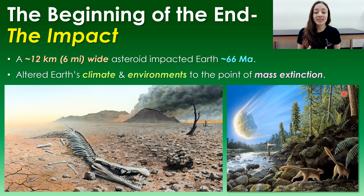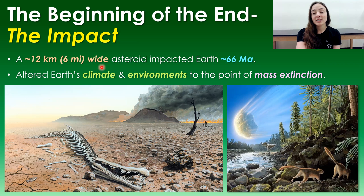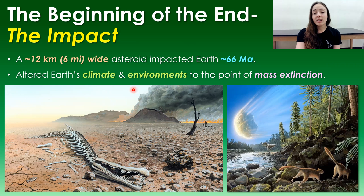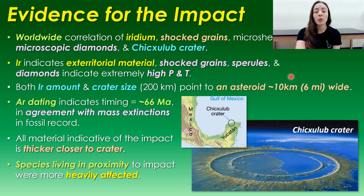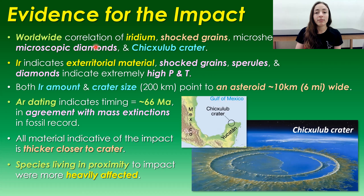So what was it that set off the series of events that caused these major extinctions? The most common thing you've heard about this extinction event is the impact of a huge asteroid around 12 kilometers or six miles wide that hit Earth around 66 million years ago, and it altered the climate and environments on Earth to the point of mass extinction. There's plenty of evidence for this impact, including worldwide correlation in the rock record of a layer of iridium — which is only common in extraterrestrial material — shocked grains, microspherials, and microscopic diamonds, which are all grain types that only form under immense heat and pressure, such as that associated with an asteroid impact.